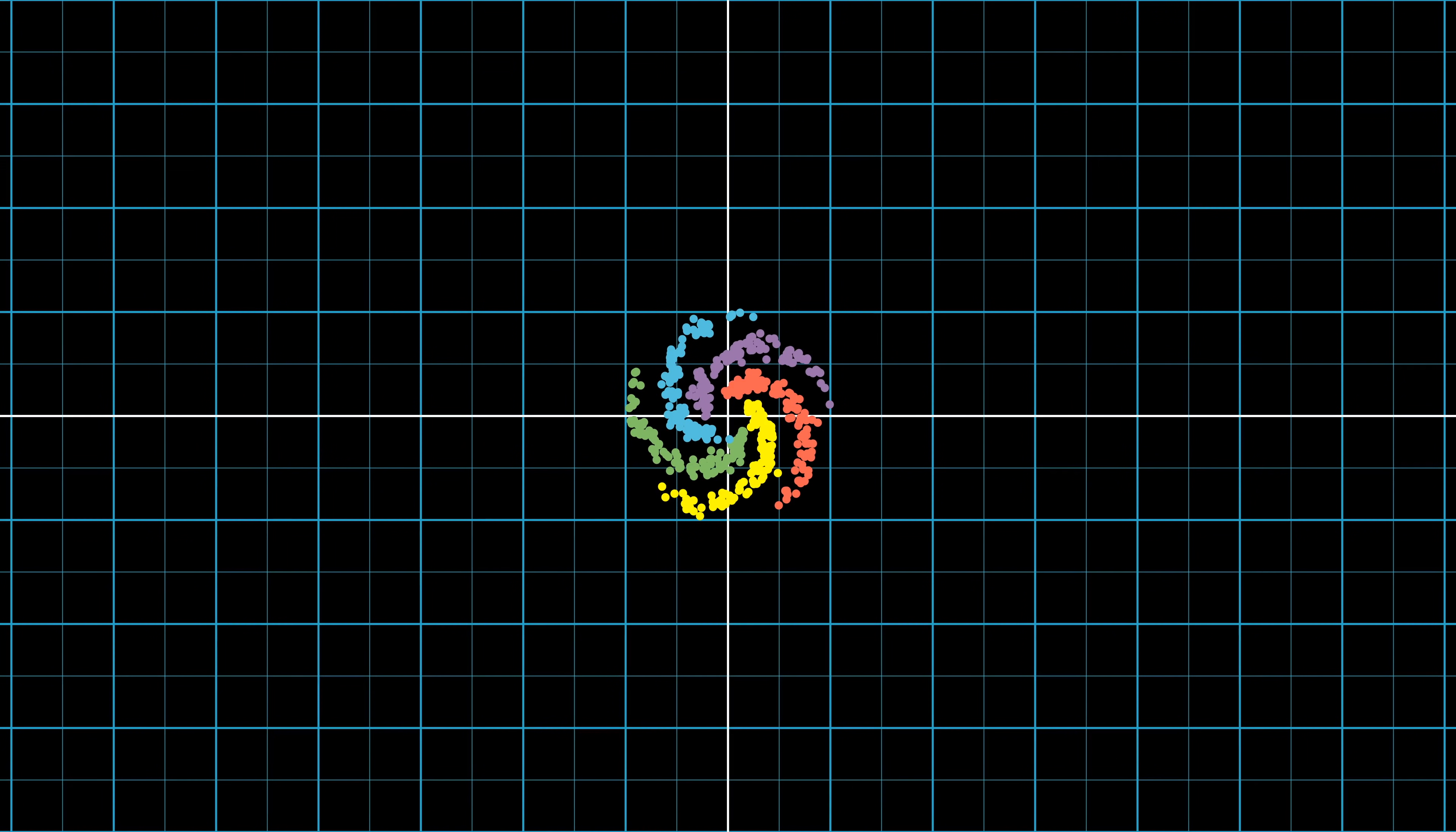All these points constitute our training data. The neural network will learn from the training data, and be able to predict new points into these spirals. We'll talk about how the training process works in the next video.